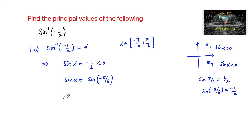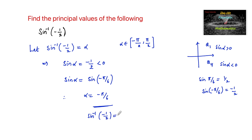Therefore, alpha is equal to negative pi by 6. So sin inverse of negative 1 by 2 is equal to minus pi by 6, and that is the answer.